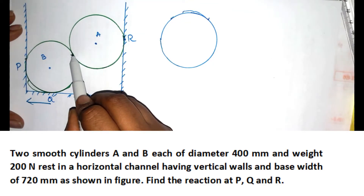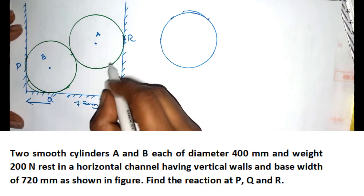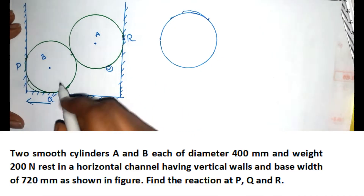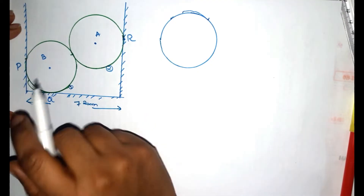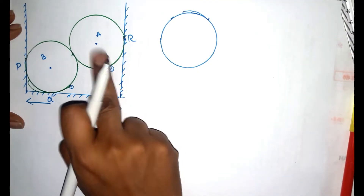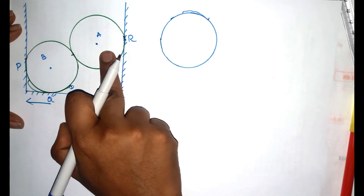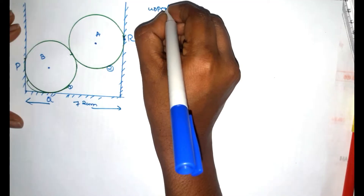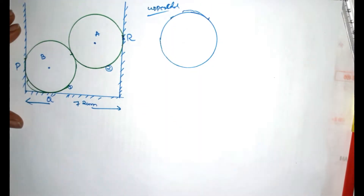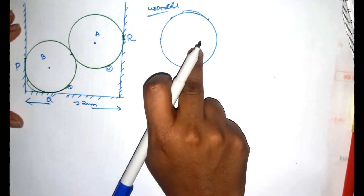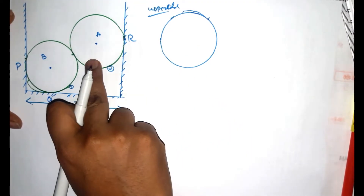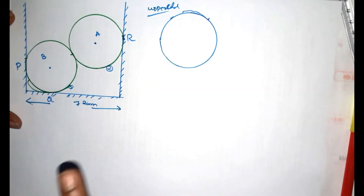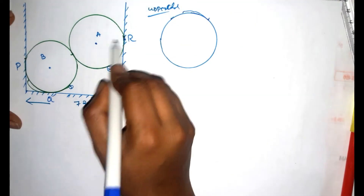Here we have two cylinders. Here is the reaction — two unknowns. Here are the three reactions. We will draw the free body diagram and remove the supports. We will be able to identify P, Q, and R.